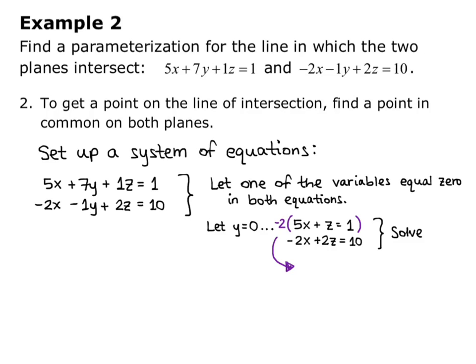So I'm going to multiply the first equation by -2, so that gives me -10x - 2z = -2, and I'm just going to write the second equation underneath that: -2x + 2z = 10. Now I add those two equations together, and that results in -12x = 8. The z is cancelled out because -2z + 2z is 0. Now it's easy from here to solve for x. I just divide both sides by -12, and I get x = -8/12, which simplifies to -2/3.